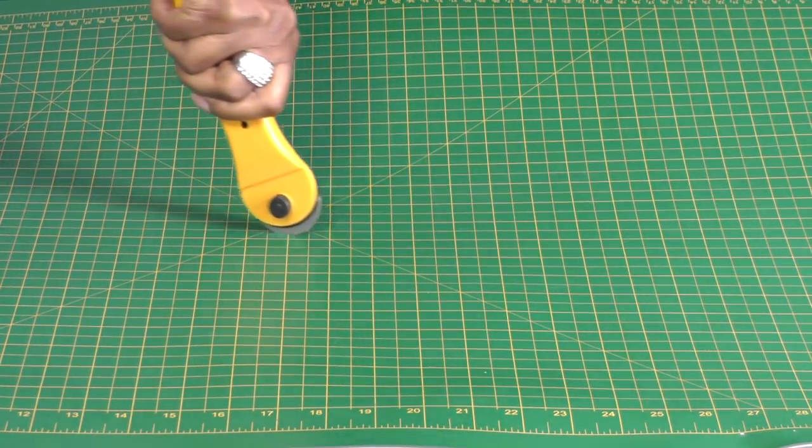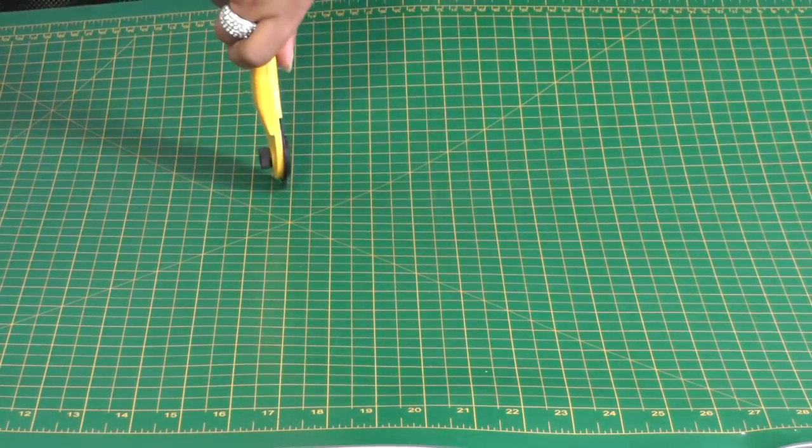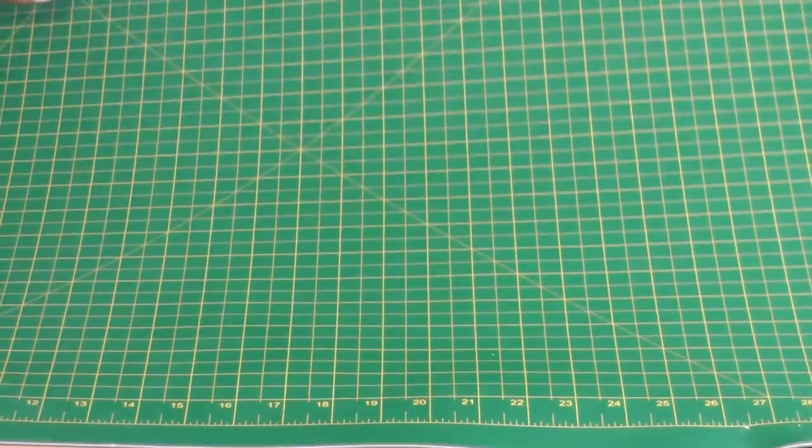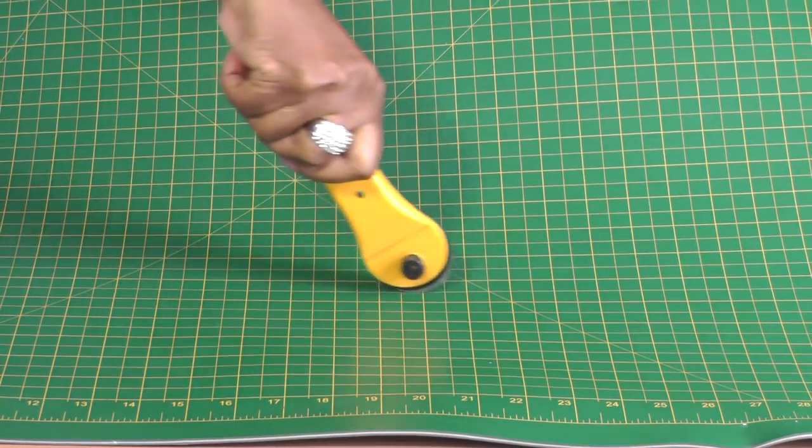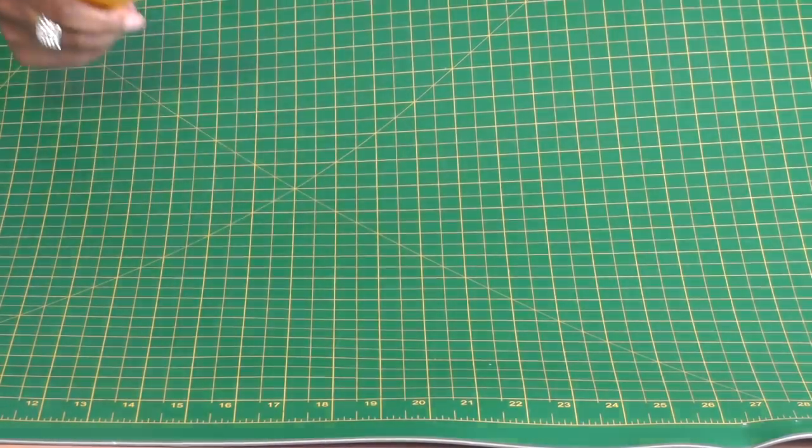There's no markings. You can press it so hard as you like. And I'll do it again. Give it a lot of pressure. There's just no markings. Hence the reason it's called a self-healing mat.